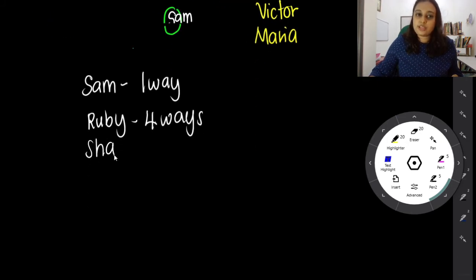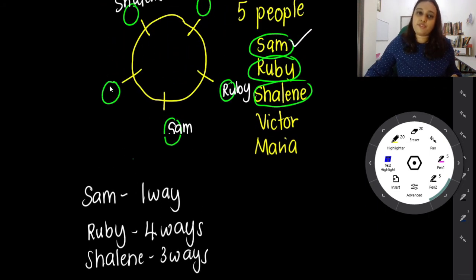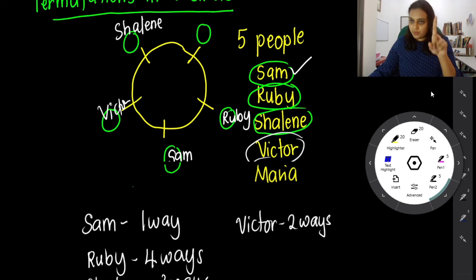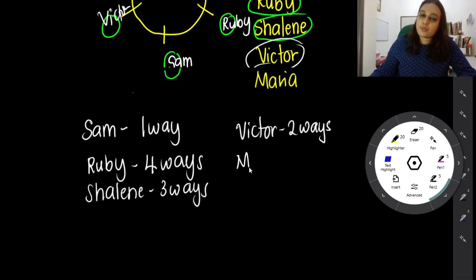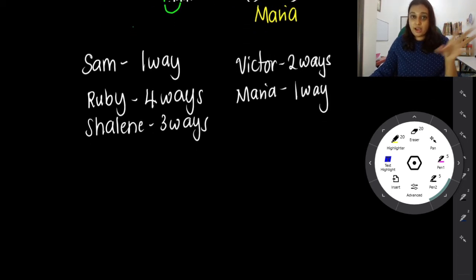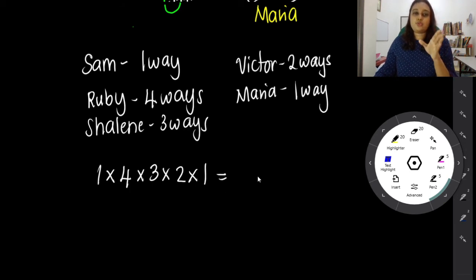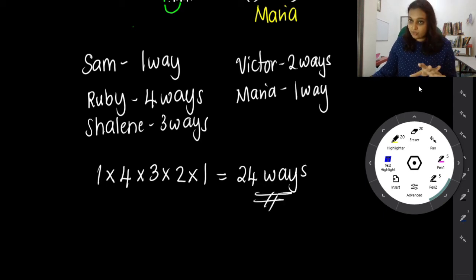Shaleen has three ways. Victor has two ways. Maria is last and has only one way. Combining all: one times four times three times two times one equals 24 ways to sit in the circle.